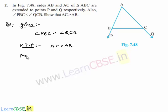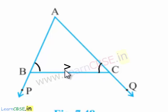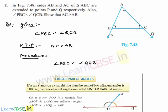Moving on to the procedure. In order to prove that AC is greater than AB, if we are able to prove that angle B is greater than angle C, then we can easily say that the side opposite to the greater angle will be greater, and AC will be greater than AB. So let us consider the given condition that angle PBC is less than angle QCB.